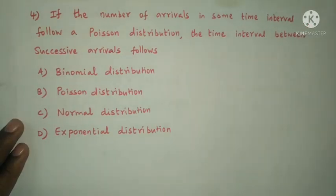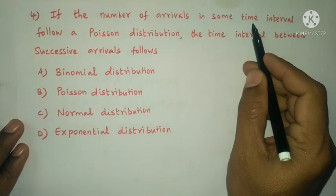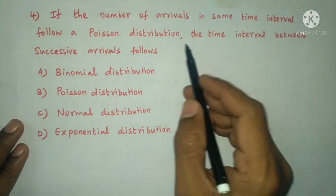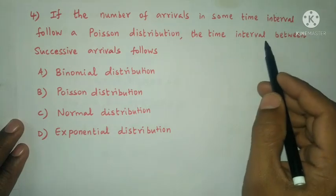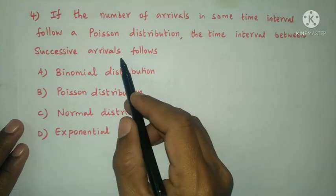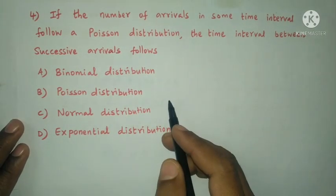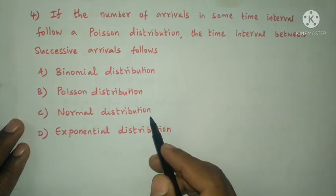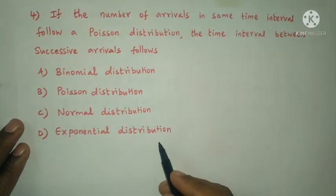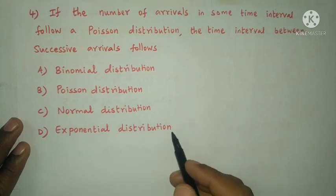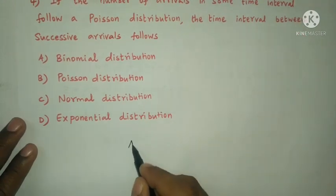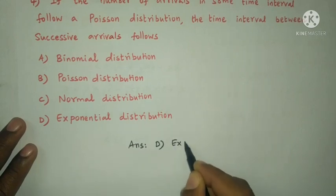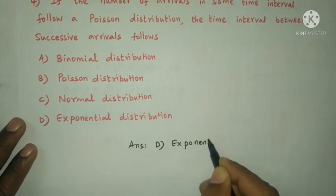Next question: If the number of arrivals in some time interval follows a Poisson distribution, the time interval between successive arrivals follows an exponential distribution. The answer is option D, exponential distribution.